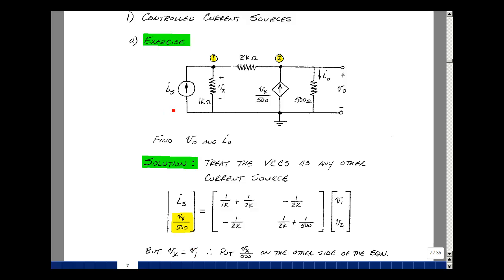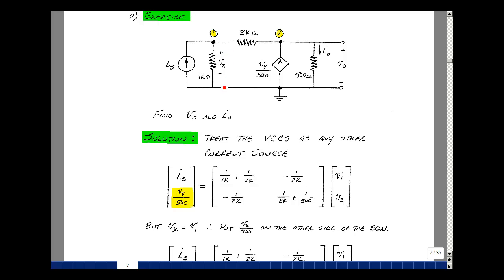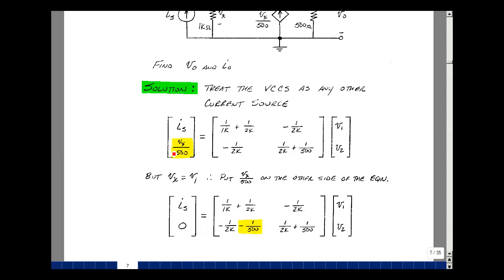In this problem, I haven't labeled the value of I sub s, but we assume that this is known, just like the resistances are. What I have in this example is actually two unknowns, V1 and V2, but I've picked up a third unknown, V sub x. If you go back and look at the circuit, node voltage 1 is V sub x. Rewrite this as V1 divided by 500. But V1 is multiplying this column, so I can bring this on the other side of the equation as minus 1 over 500.